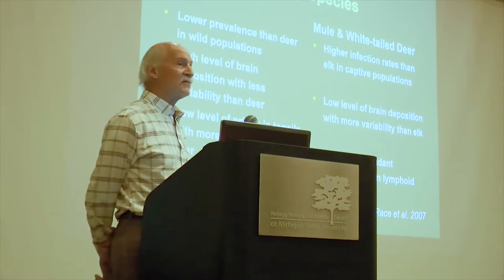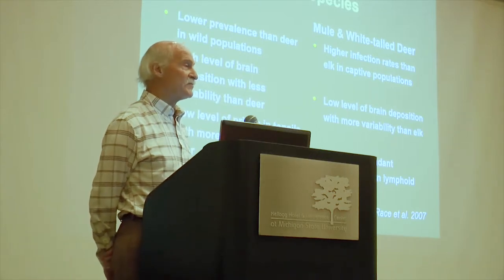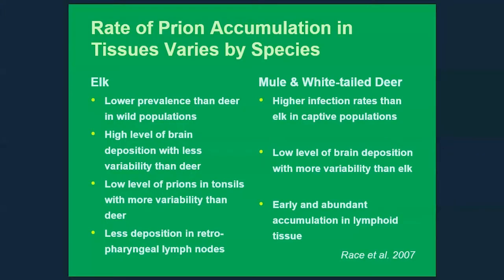Looking at patterns in published work, we see differences between deer species — mule deer and white-tailed deer compared to elk — in terms of how they accumulate prions in their tissues. Elk seem to have a lower prevalence of CWD than deer, and a much longer incubation period. It typically takes a couple of years for mule deer and white-tailed deer, and for elk it can easily go another year or two beyond that.